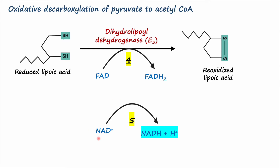In step five, the hydride ion from FADH2 is transferred onto NAD+ to synthesize NADH, and as a result FADH2 is oxidized back to FAD. This completes the overall reaction of oxidative decarboxylation of pyruvate to acetyl coenzyme A.